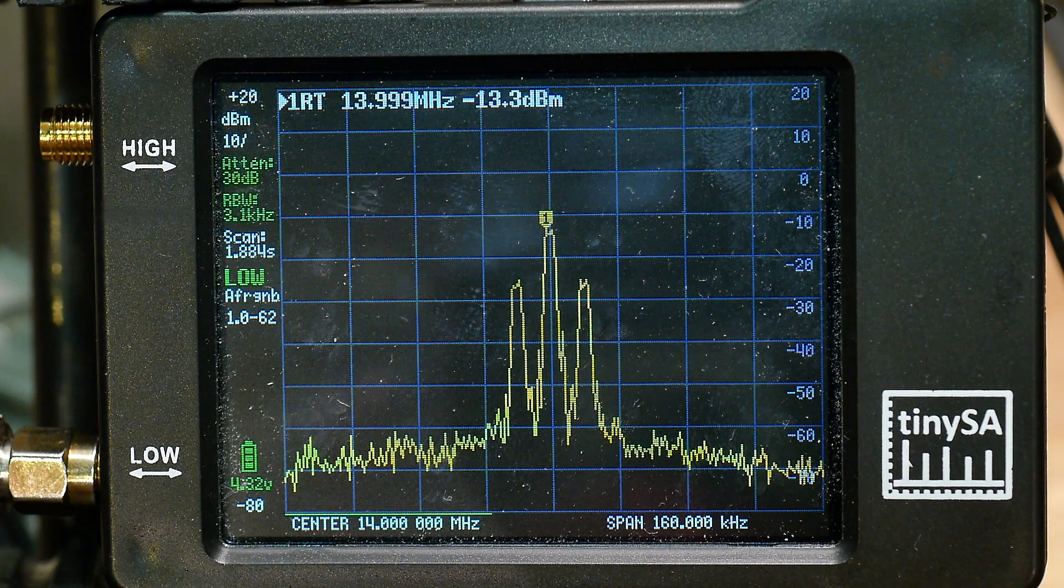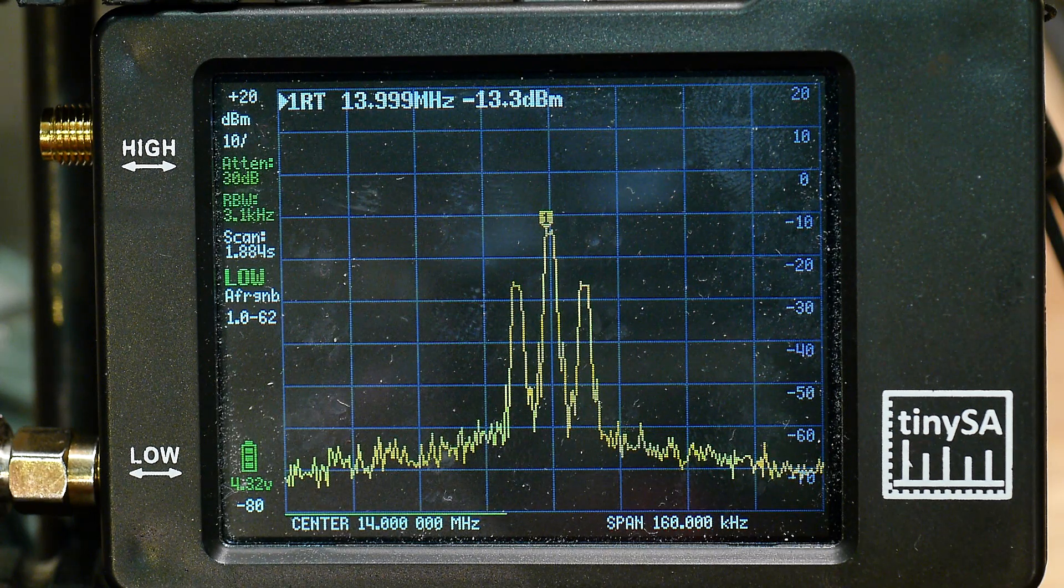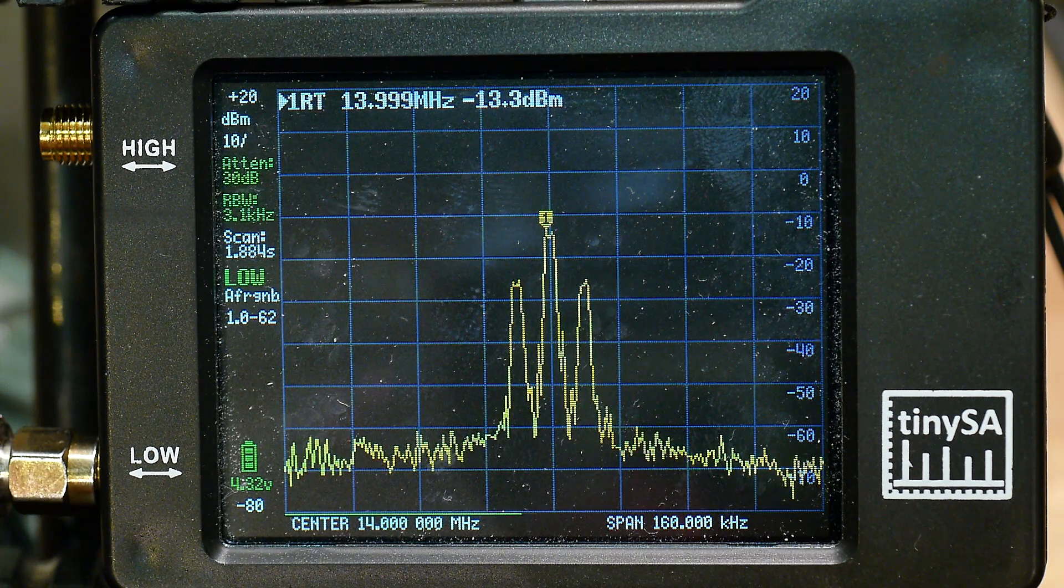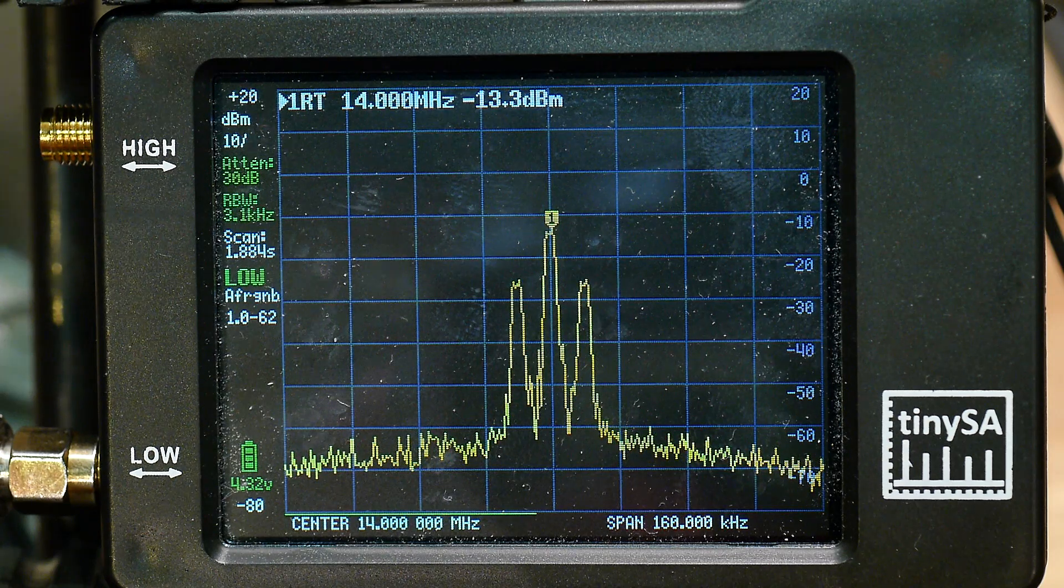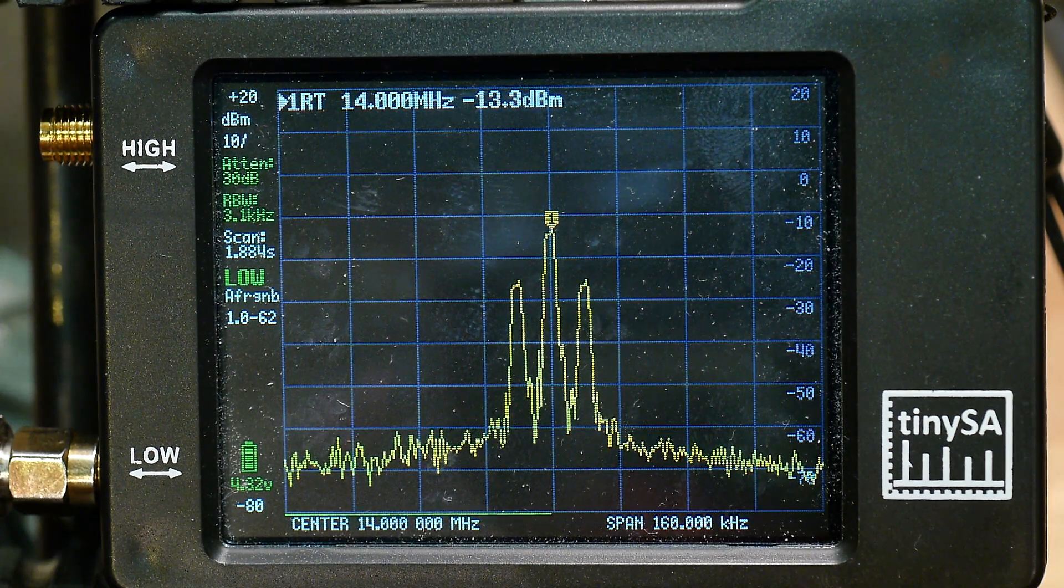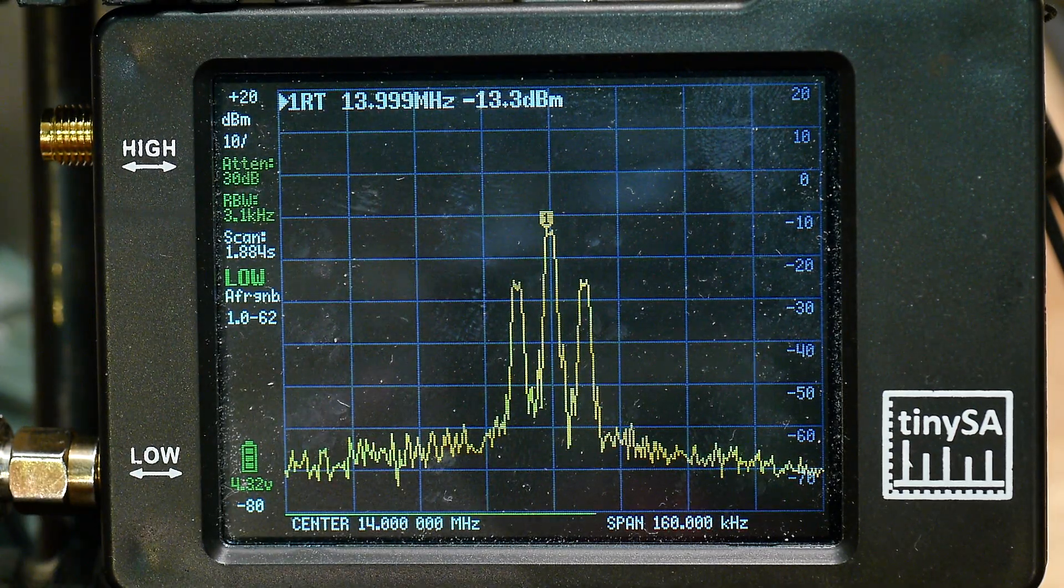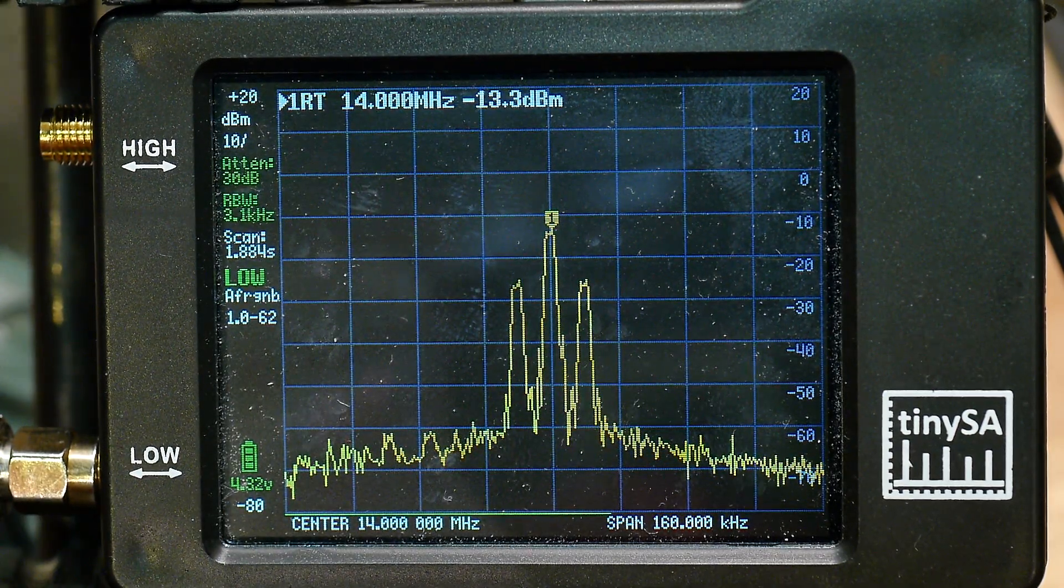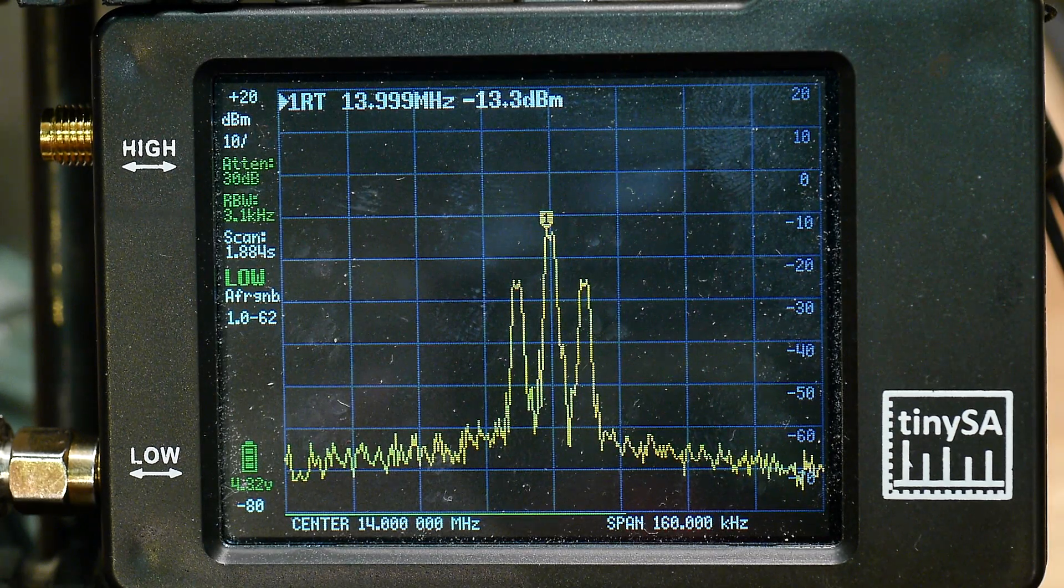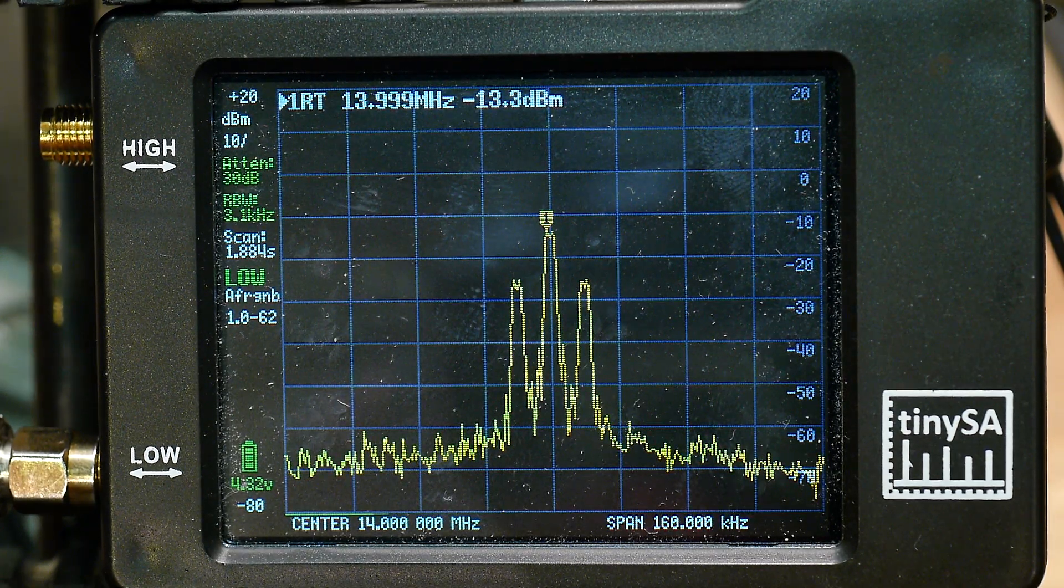So make sure that your signals are below minus 30 dBm and things will be better. And then play with your resolution bandwidth until you get a good looking image. Now there's nothing magical about three kilohertz. It's just better than auto. So for whatever you're looking at, try different resolution bandwidth settings to get the best image.